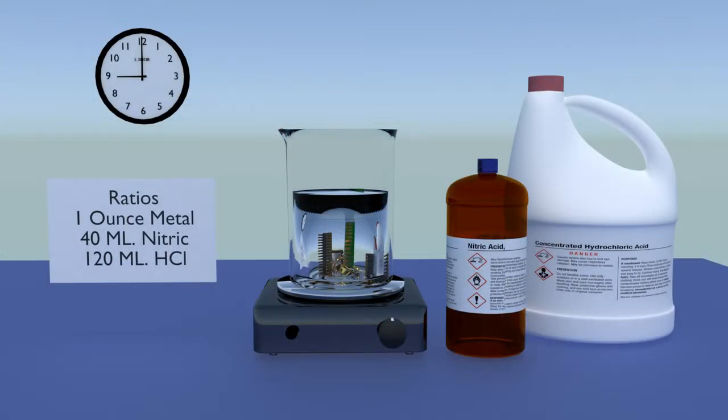Dissolving your metal using muriatic and nitric acids: for every ounce of metal that you are refining, add 40 milliliters of nitric acid and 120 milliliters of muriatic acid. Be very careful, the acids and the fumes are very very corrosive.